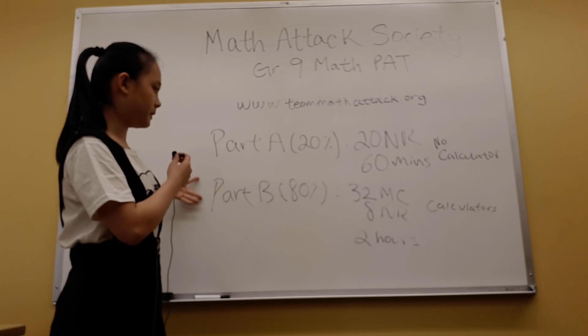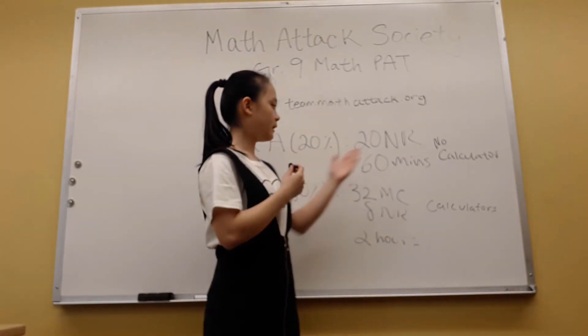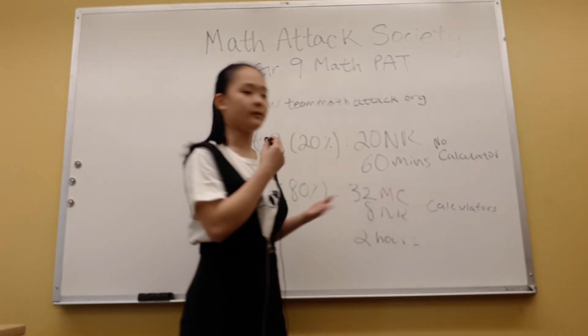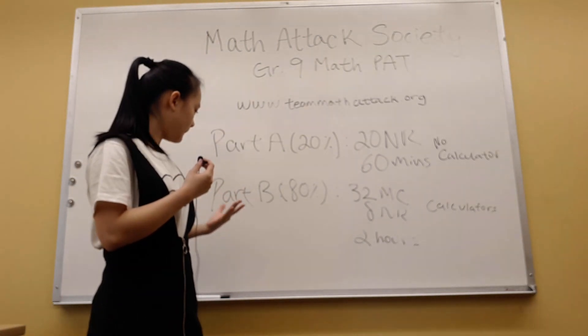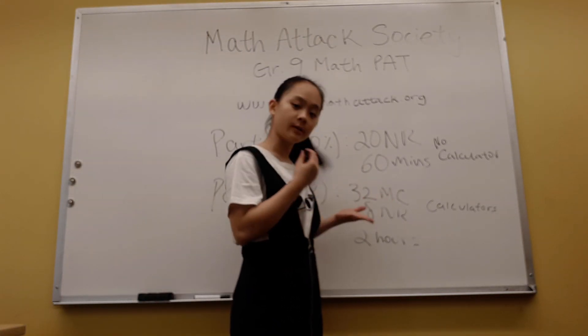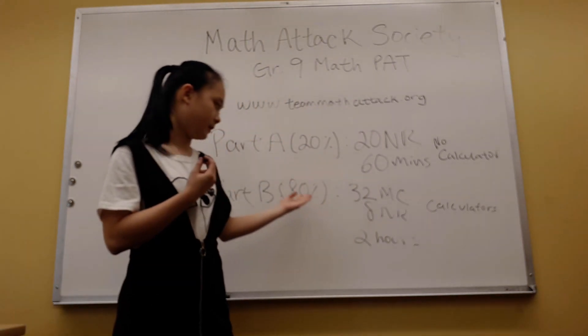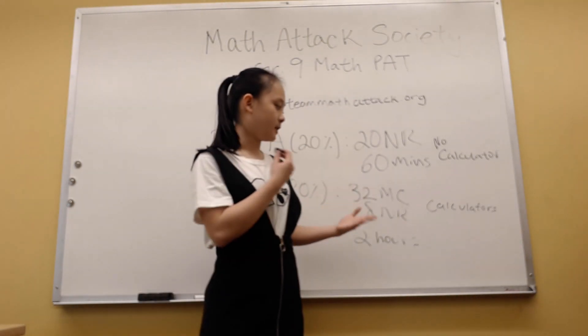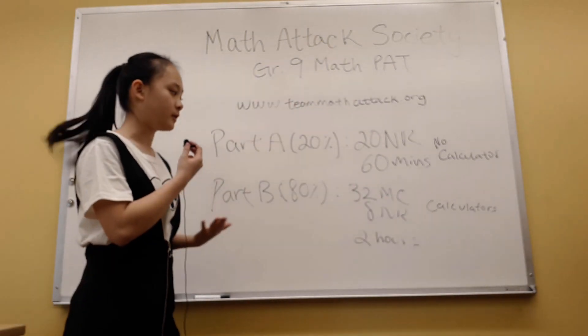So the difference between part A and part B is that in part A, you're not allowed a calculator, so you have to do everything by hand or in your brain, and part B, the questions would be a bit harder, which is why it's worth 80%, and because of that, you would get to use a calculator.